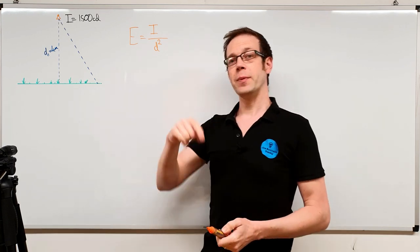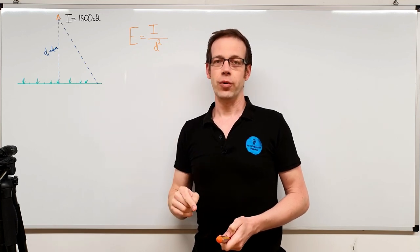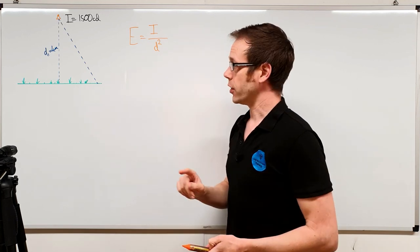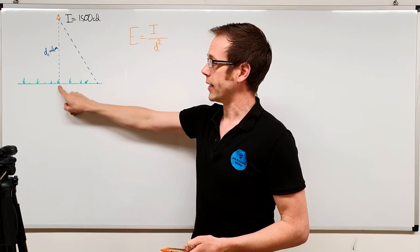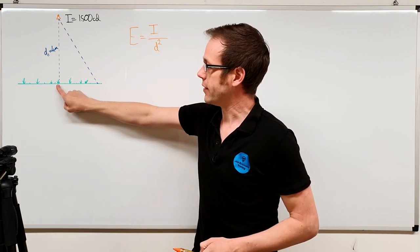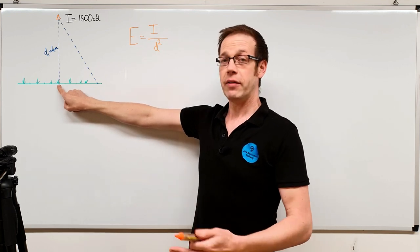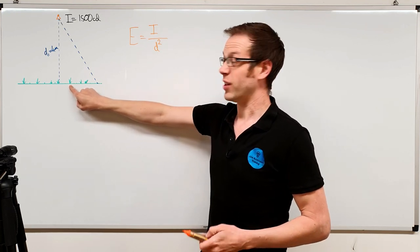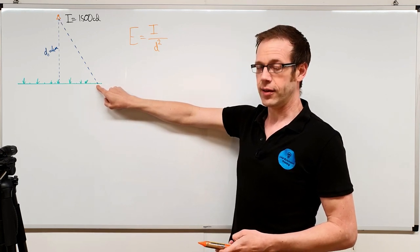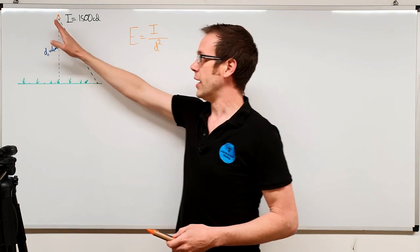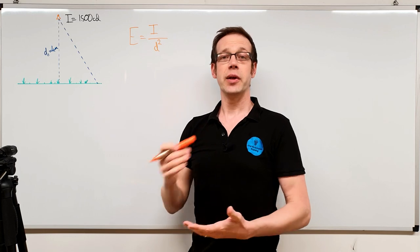If you haven't watched those previous videos, please go back and watch them, because it's going to help you understand what we discuss here. In this video, we're going to discuss what happens to the light level as you get further and further away from being directly underneath the light. In previous videos, we calculated the light level at the point directly below the light fitting. Many people have asked, quite rightly, how do we figure out what difference it makes when we're not directly under the light — when the light is coming down at an angle instead of perpendicular?